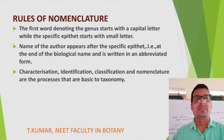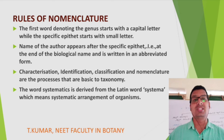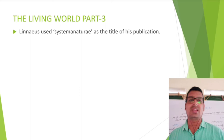The word systematics is derived from the Latin word 'systema', which means systematic arrangement of organisms. Linnaeus used 'Systema Naturae' as the title of his publication.